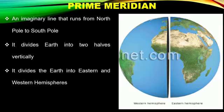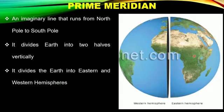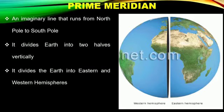Now we come to Prime Meridian — an imaginary line that runs from North Pole to South Pole. It divides the Earth into two halves vertically — into Eastern and Western Hemispheres. The Eastern Hemisphere lies to the East of Prime Meridian and the Western Hemisphere lies to the West of Prime Meridian.